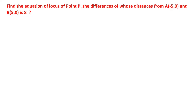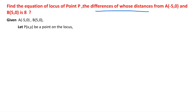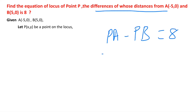Find the equation of the locus of a point P, the difference of whose distances from A and B is 8. Given two points A(-5, 0) and B(5, 0), let P(x, y) be any point on the locus. The given condition is that the difference of the distances means PA minus PB equals 8, or PB minus PA equals 8.